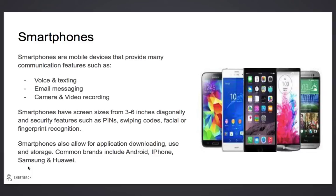Our first device type is Smartphones. Smartphones are mobile devices that provide communication features such as voice and text, email, and video recording. Smartphones have screen sizes that are 3 to 6 inches diagonally. Smartphones use security features such as pin numbers, swiping codes, or facial and fingerprint recognition.